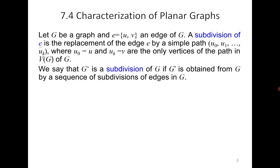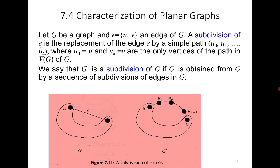This will be clear from the following example. You can see graph G has an edge u-e, and then you subdivide it by introducing degree-2 vertices, so now there is a path from u to e, and therefore G' is a subdivision of G.